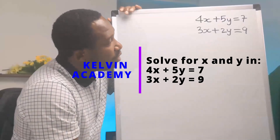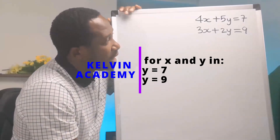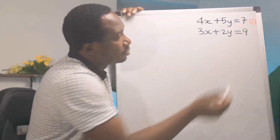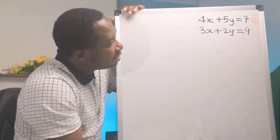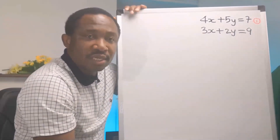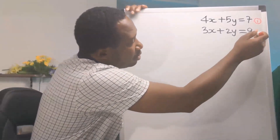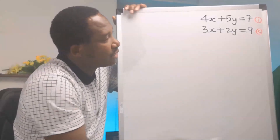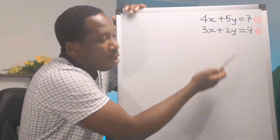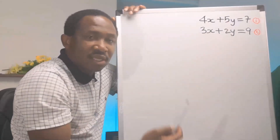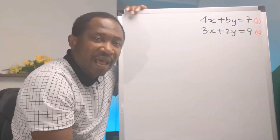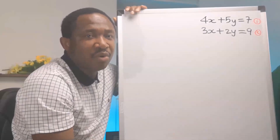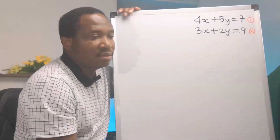Let's consider 4x + 5y = 7, which is equation 1, and 3x + 2y = 9, which is equation 2. Whenever you begin to consider the coefficient of x or the coefficient of y, that means you want to apply the elimination method. However, in this video we want to consider only the substitution method.